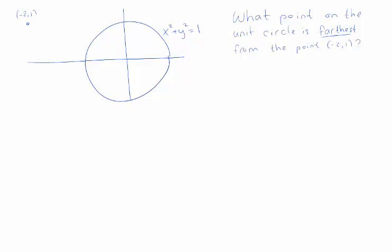Let's do another optimization problem. This is similar to one on the slides. We have the unit circle, which has equation x squared plus y squared equals 1, and we have some point, minus 2, 1, that's not on the circle.